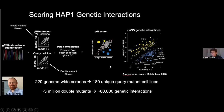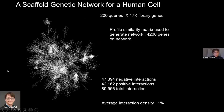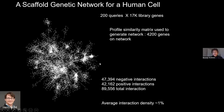Henry Ward, a PhD student in Chad's lab, has been looking at genetic interaction profiles from screens done so far to see if structures are emerging like we saw in yeast. The network he produced involved a couple hundred queries — 200 queries by 17,000 library genes — using a profile similarity matrix. With about 80,000 total interactions, we're starting to see regions of clustered genetic interaction profile similarity on this human genetic interaction network, which we found quite exciting.